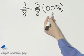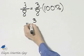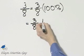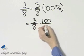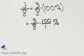And I'm multiplying by 1 again in the form of 100%. So this is 3 over 8 times, I'll write the 100 as 100 over 1, and this is our percent. We just need to simplify.